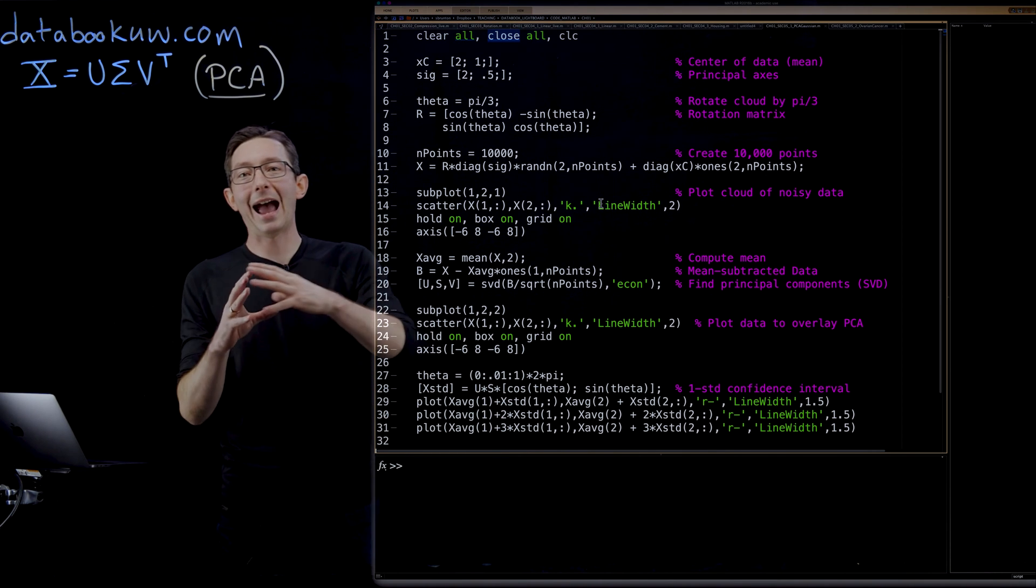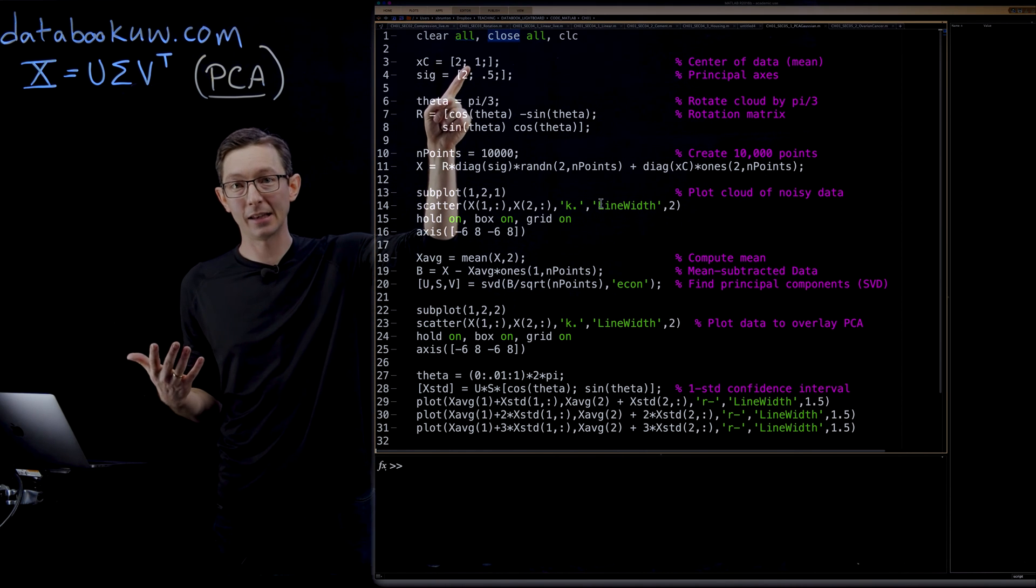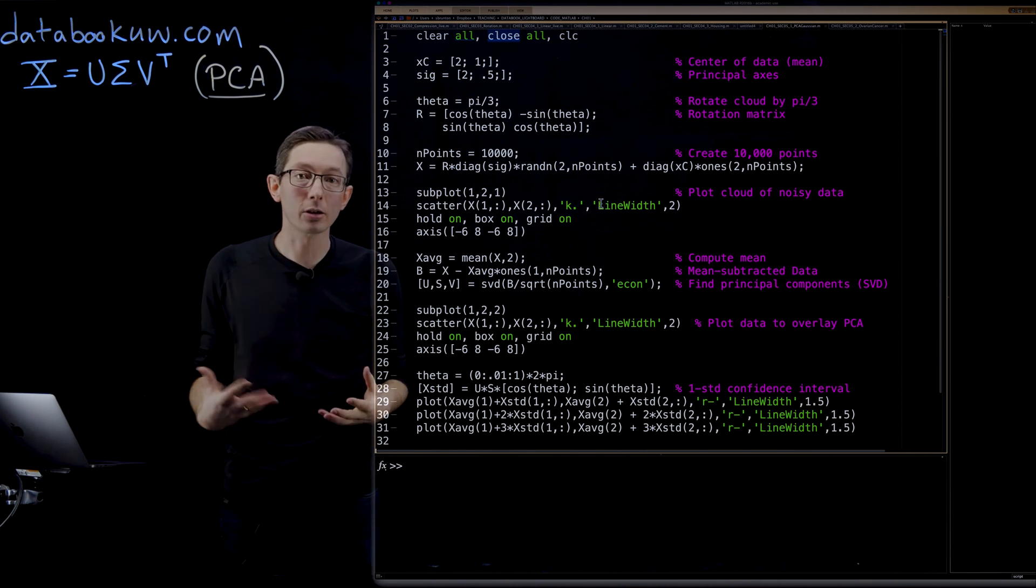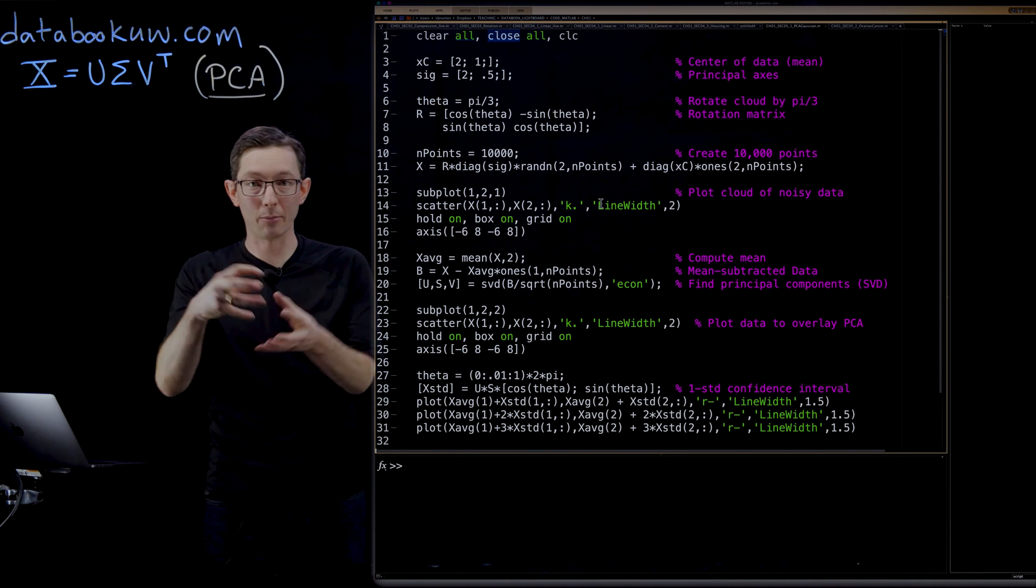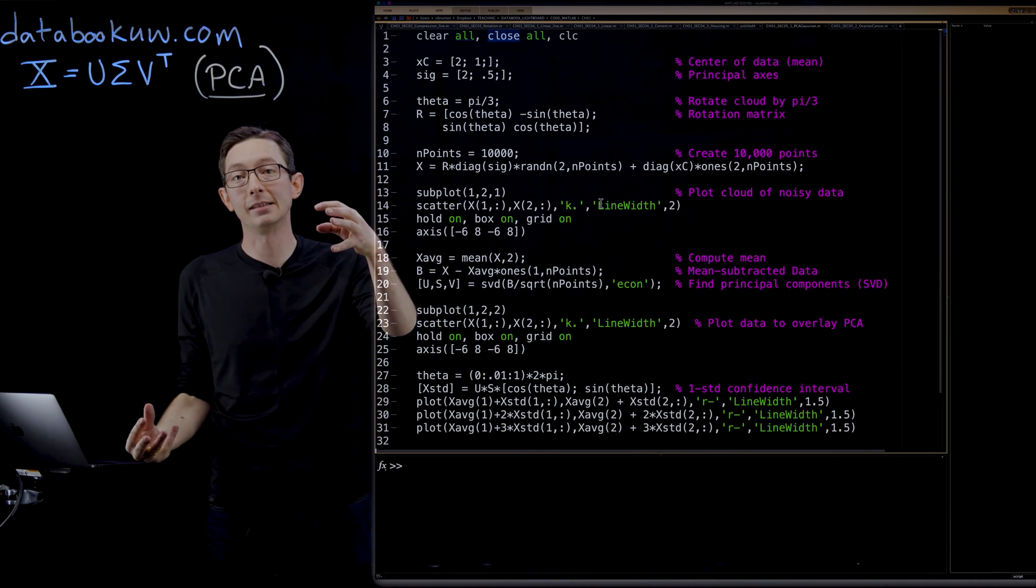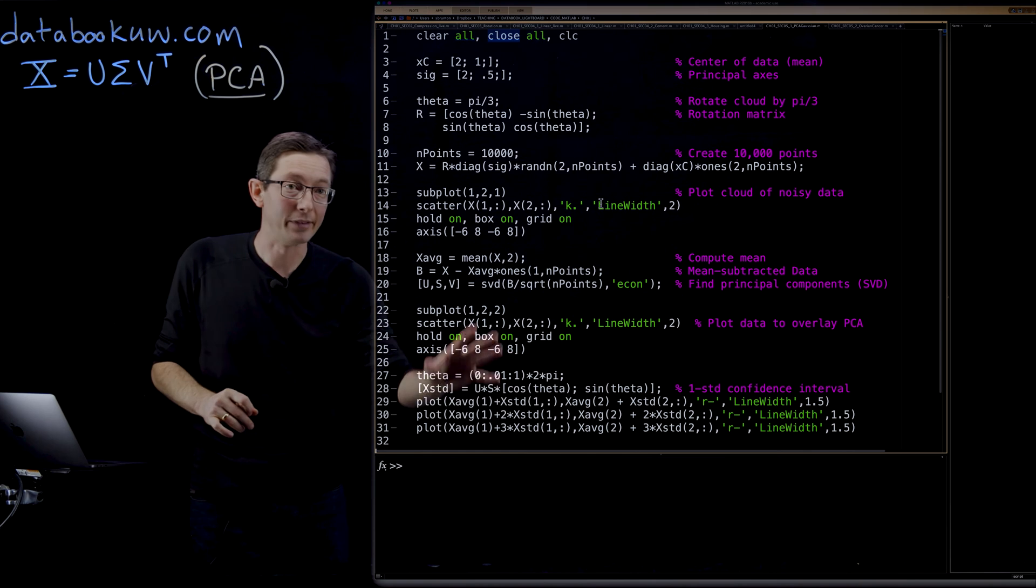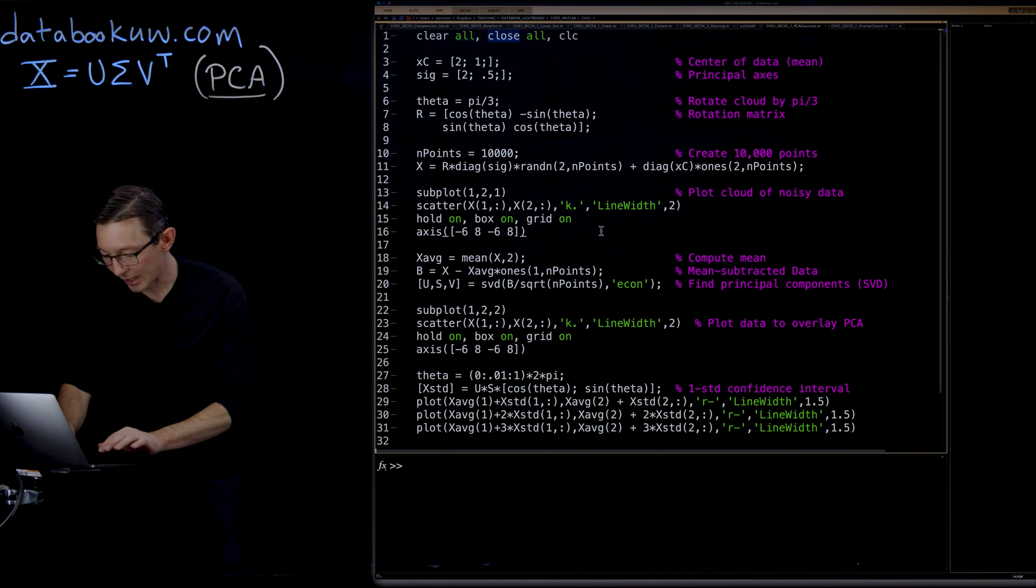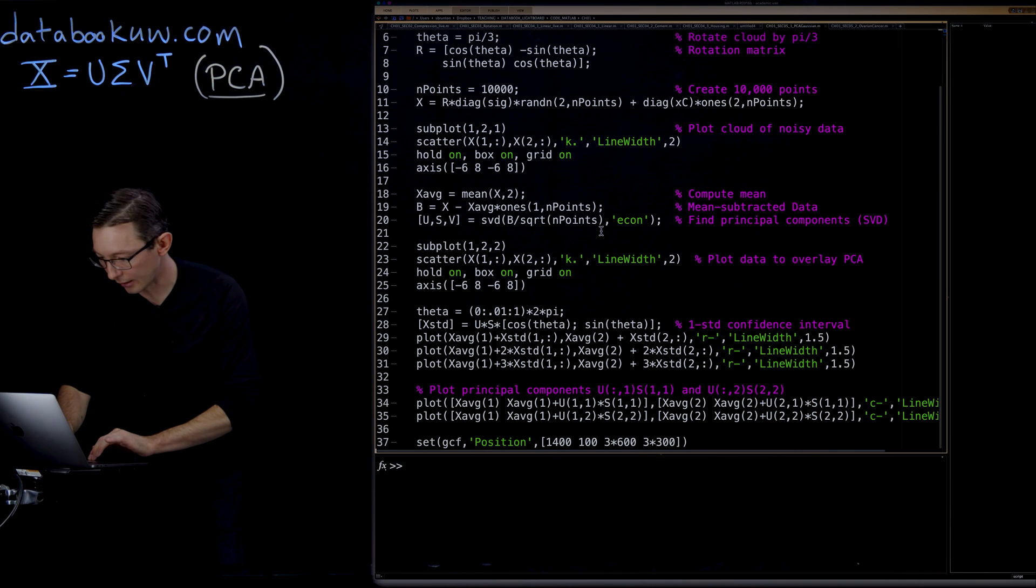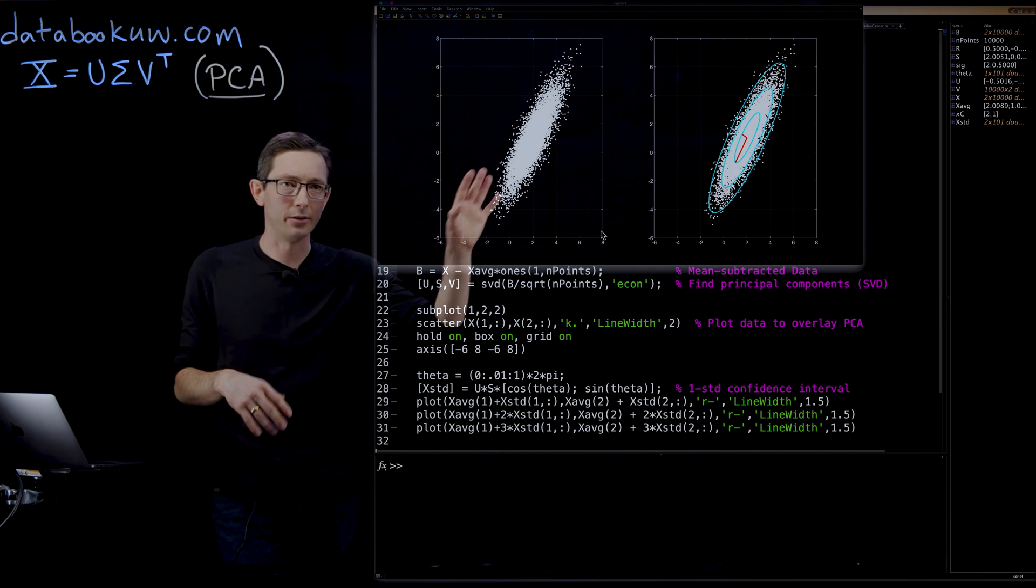Then we're going to act like we didn't know what the rotation and the sigma and the x center was, and we're going to see if we can learn that from the singular value decomposition, if we can learn the principal components, the principal axes of variance of this data set just from the measurements of x1 and x2. And that's what we're going to plot in subplot 1, 2, 2. So I'm actually going to bring the whole plot up all at once to start with, and then I'm going to talk you through this.